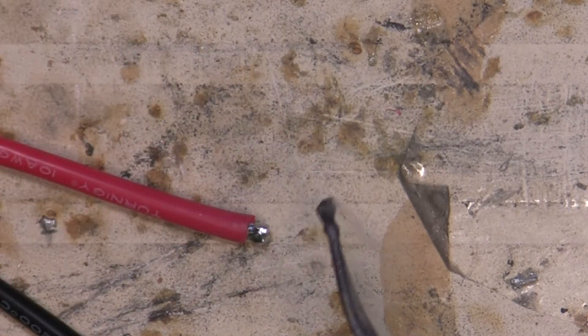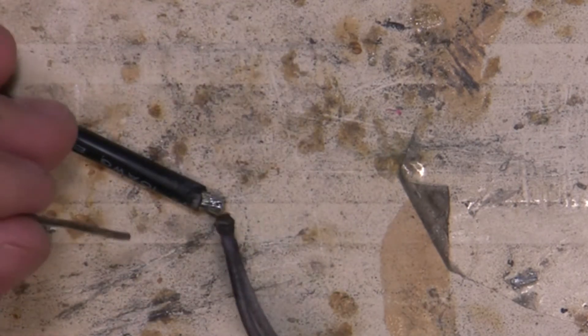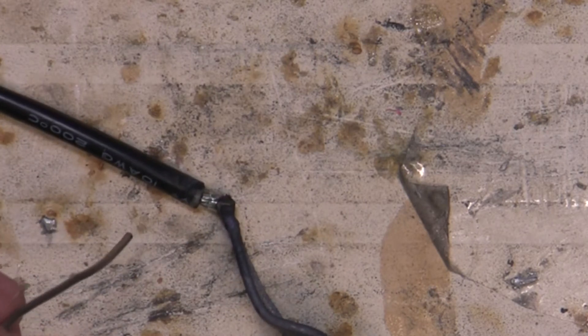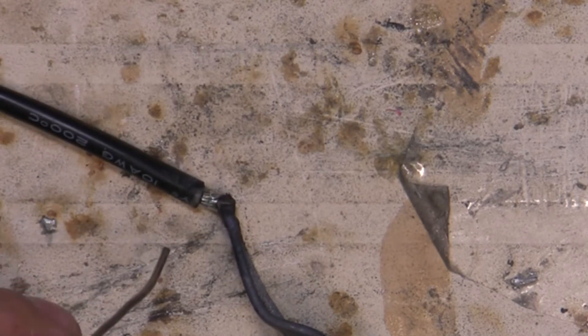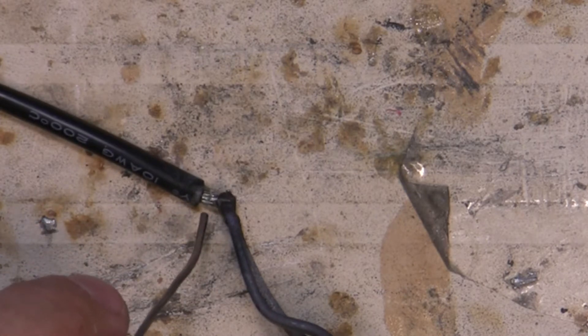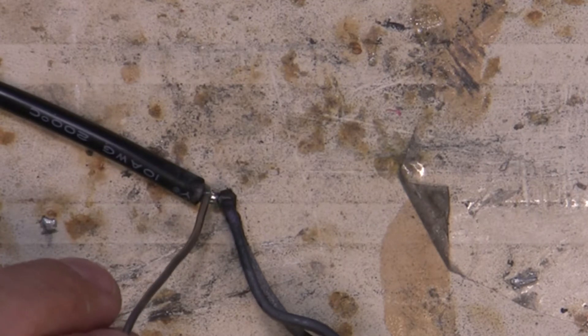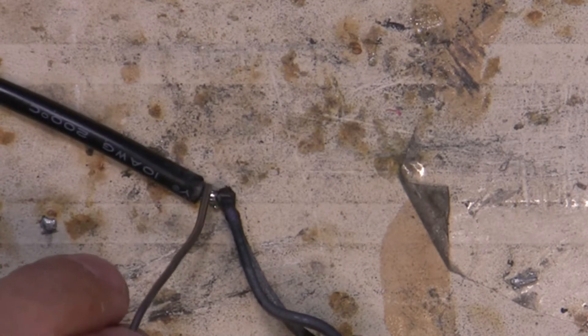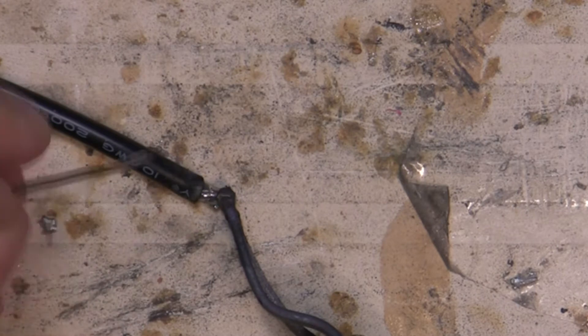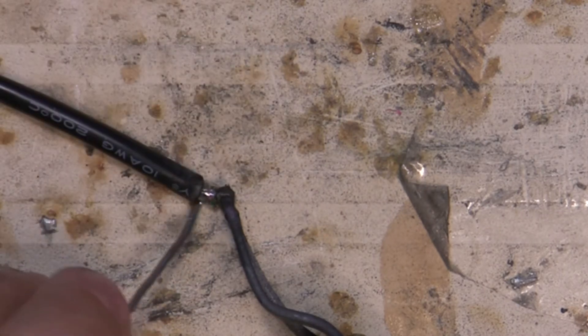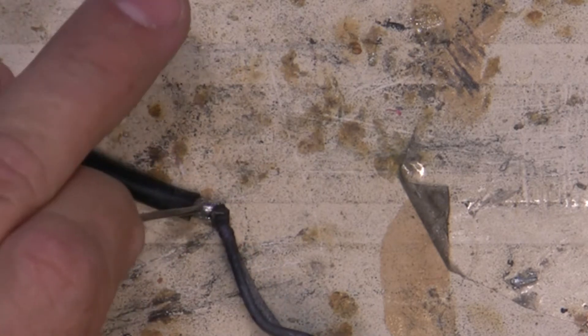Sometimes when it comes out of that connector it's kind of misshapen too. So while you have heat applied to it, try to reshape the tip of the connector so it's not like a weird shape. Okay, we're going to heat our negative wire here. Start to melt the solder that's on there.